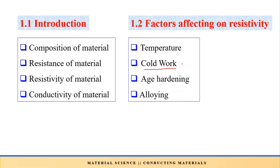The second factor affecting resistivity is cold work, which is a process adopted during the manufacturing of metals. During cold work, structural changes occur in the crystal structure of the metal, causing the conductivity to change. Higher changes in crystal structure lead to a decrease in conductivity, and if conductivity decreases, resistivity increases.